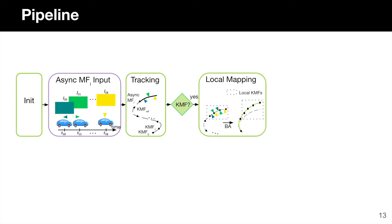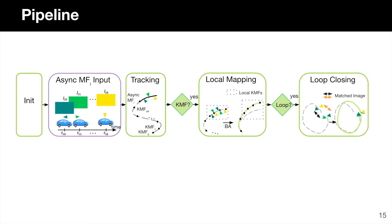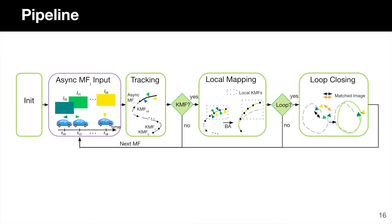If the current multi-frame is selected as a key multi-frame, we conduct local mapping with window bundle adjustment, where we jointly optimize the pose parameters and map points over a recent set of key multi-frames to ensure local consistency. After this, we check whether the robot is revisiting a previously mapped area. If a loop is encountered, we perform asynchronous multi-view loop closure to correct global drift. After loop closure, or if the answer is no to any of the previous questions, we take the next upcoming asynchronous multi-frame as input and repeat this process.